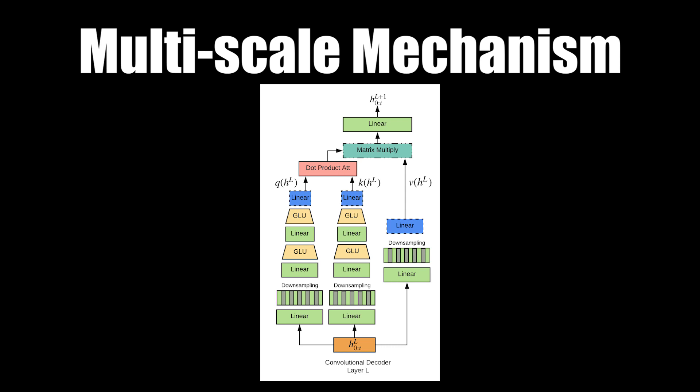In order to diversify these heads, they presented a multi-scale mechanism which leveraged the down sampling layers that I mentioned previously. The first head sees the full input, the second head sees only every other input, and so on and so forth. In this way, each head is forced to focus on different parts of a context.